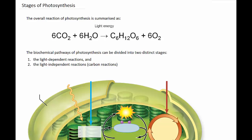Photosynthesis is the process in which plants utilize light energy and use it to break down water and carbon dioxide in order to build oxygen and glucose. This overall reaction is summarized as carbon dioxide, which they get from the atmosphere, and water, which is drawn up through the roots. Plants use light energy to then convert those reactants into glucose and oxygen.